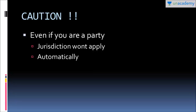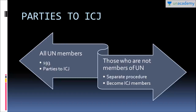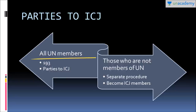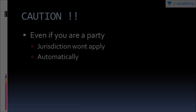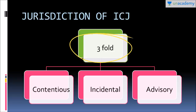One important point: even if you are a party to the International Court of Justice, the jurisdiction of the ICJ will not apply to you automatically. There is a difference between being a party to the ICJ and being under its jurisdiction. If we talk about the jurisdiction of the ICJ, it has three-fold jurisdiction: one is the contentious jurisdiction, another is the incidental jurisdiction, and third is the advisory jurisdiction.